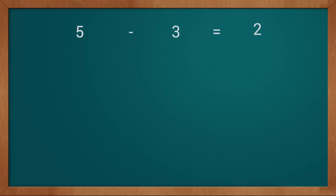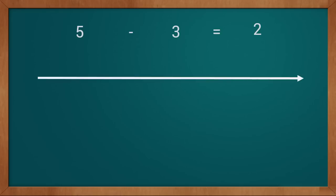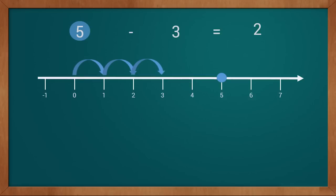Now we understand subtraction with the same example on a number line. Our problem is five minus three equals two. This is our number line. First we find five — we count from zero: one, two, three, four, five. We find five on the number line. Similarly we find three — counting from zero: one, two, three. We find both five and three on the number line.